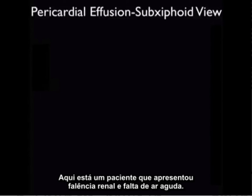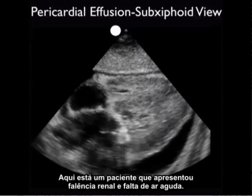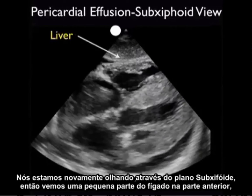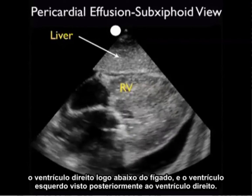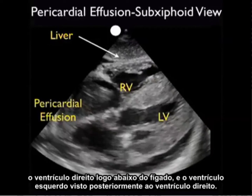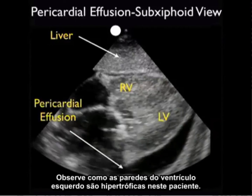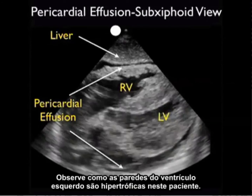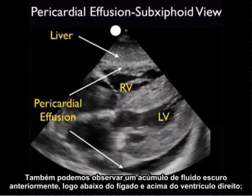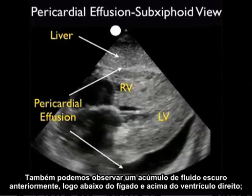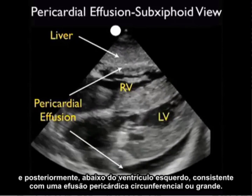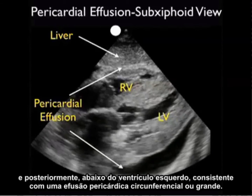Here's a patient who presented with renal failure and acute shortness of breath. We're again looking from the subxiphoid plane, so we see a little strip of the liver anteriorly, the right ventricle just below the liver, and the left ventricle seen posteriorly to the right ventricle. Notice how hypertrophic the walls of the left ventricle are in this patient. We also appreciate a dark fluid collection both anteriorly just below the liver and above the right ventricle, and posteriorly below the left ventricle, consistent with a circumferential or large pericardial effusion.